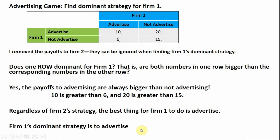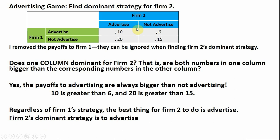Let's do the same thing from firm two's perspective. To find the dominant strategy for firm two, we can ignore the numbers for firm one, so I'm leaving those blank. The question we want to ask: does one column dominate for firm two? That is, are both numbers in one column bigger than the corresponding numbers in the other column? We can see that the not advertising column is dominated by the advertising column — 10 is bigger than 6, and 20 is bigger than 15. So firm two has a dominant strategy: regardless of firm one's strategy, the best thing for firm two to do is to advertise.